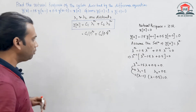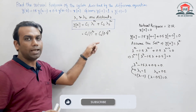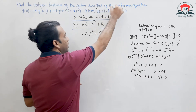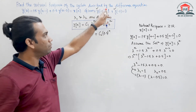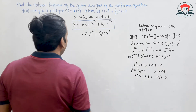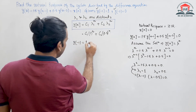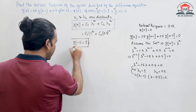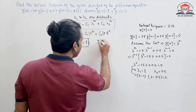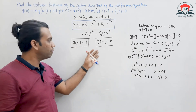This is not the final solution yet because we still need to find c1 and c2. To find these arbitrary constants, we will use the given initial conditions: y(-1) = 1 and y(-2) = 0.